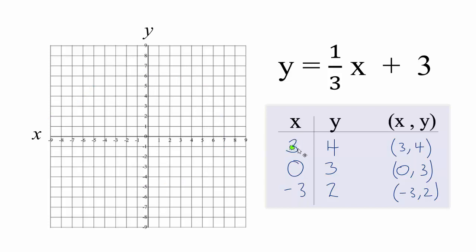So let's graph the points. We have 3 for x, 4 for y, so 3 and we go up to 4 on the y axis, that's our first point. Then we have 0x, 3y, so here's 0x and 3y. One more, negative 3x and then 2y. You can see they all line up.